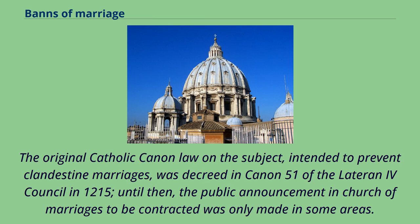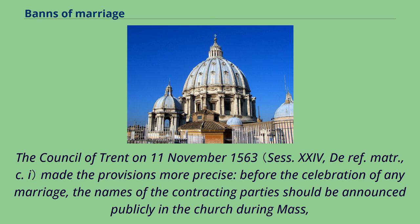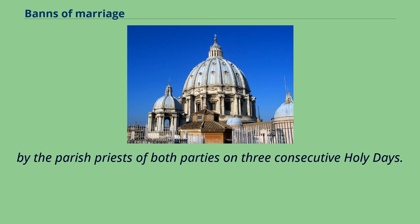The original Catholic canon law on the subject, intended to prevent clandestine marriages, was decreed in Canon 51 of the Lateran IV Council in 1215. Until then, the public announcement in church of marriages to be contracted was only made in some areas. The Council of Trent on November 11, 1563 made the provisions more precise: before the celebration of any marriage, the names of the contracting parties should be announced publicly in the church during Mass, by the parish priests of both parties on three consecutive holy days.